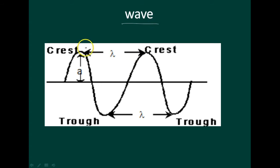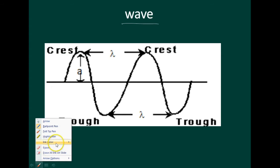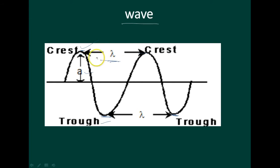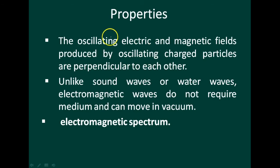Looking at how waves travel: the peak part is called the crest and the lowest part on the negative side is called the trough. Lambda is the wavelength - the space between two waves. The height of the peak level is the amplitude. This is how the wave can be observed in the figure.